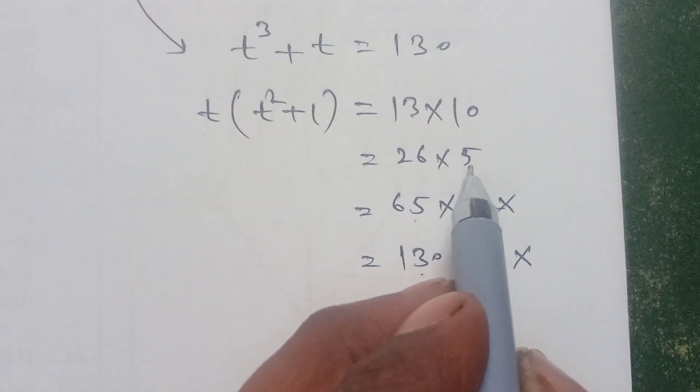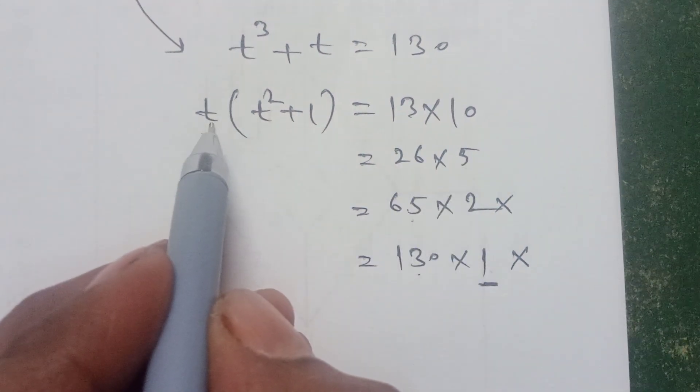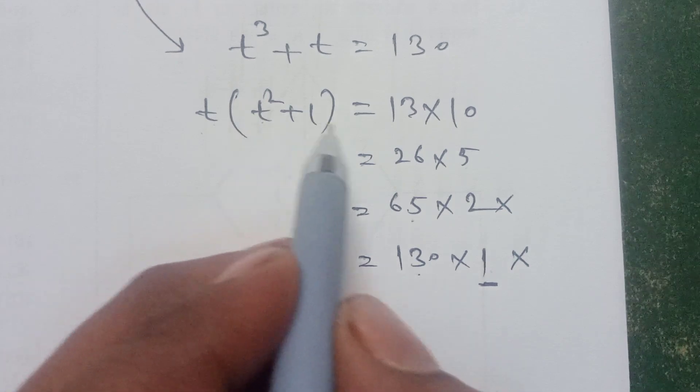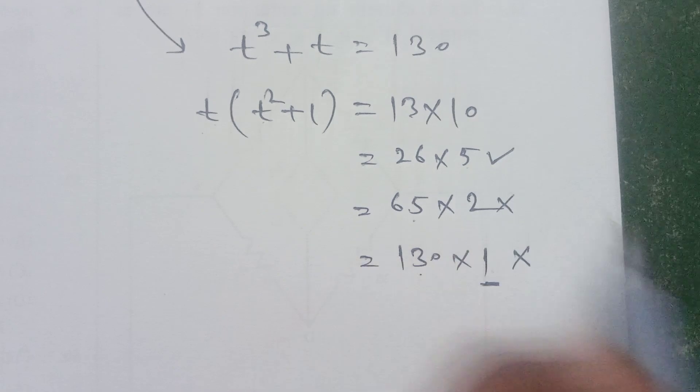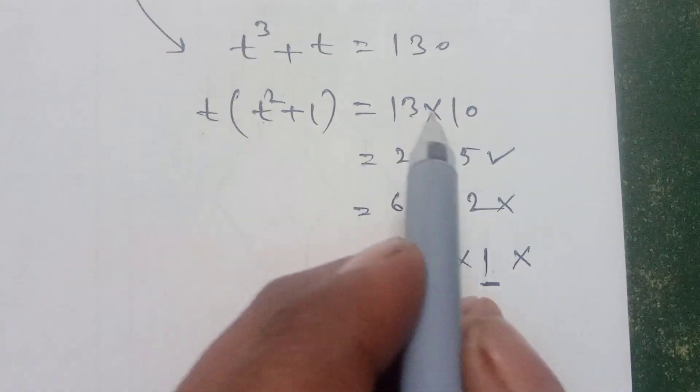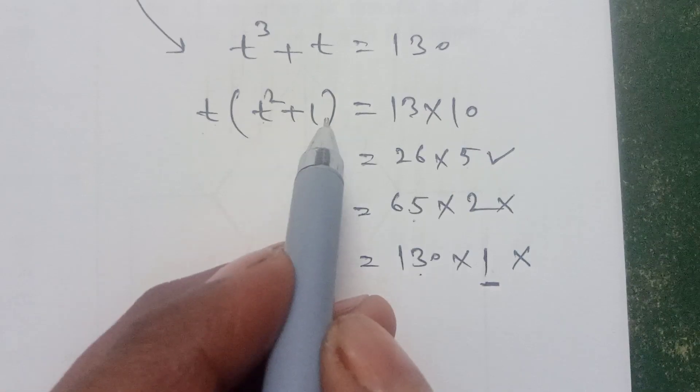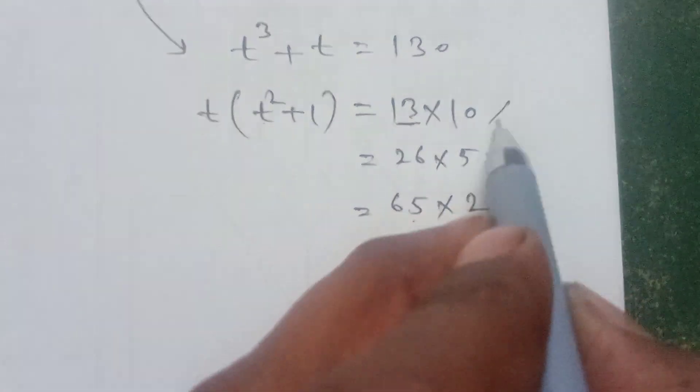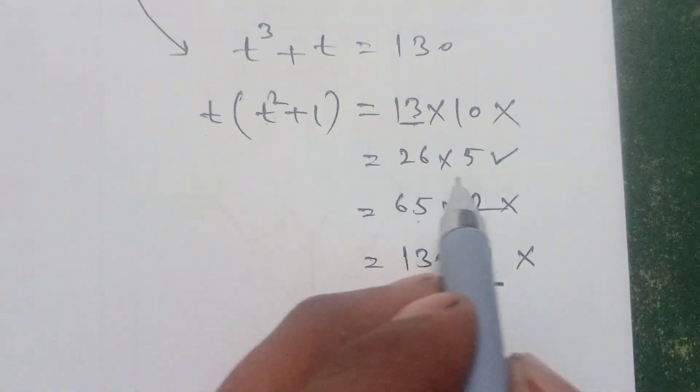Third, we can check t is equal to 5. 5 squared plus 1 is 25 plus 1 equals 26. It applies! And t is equal to 10, 10 squared plus 1 is 100 and 1, 101, but this is 13, so this does not apply.